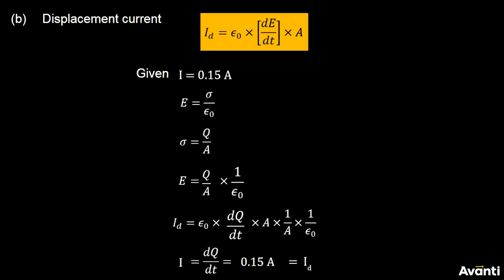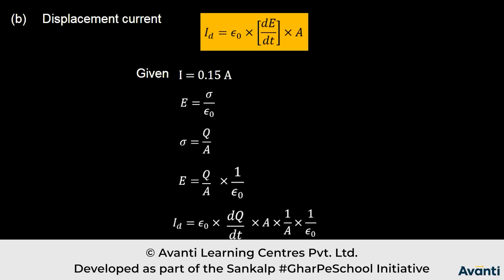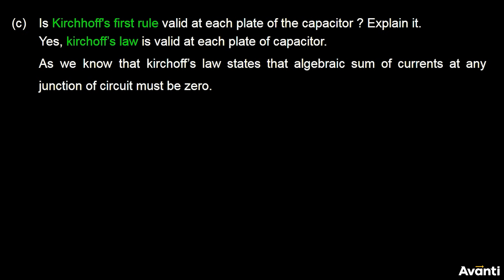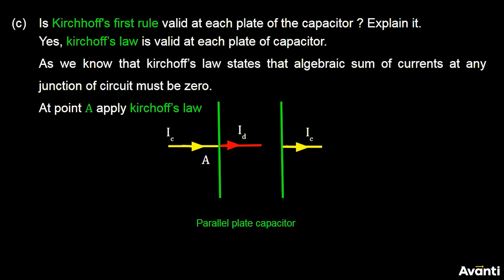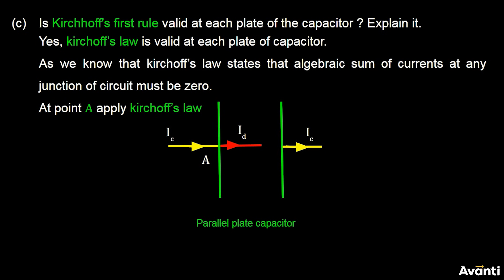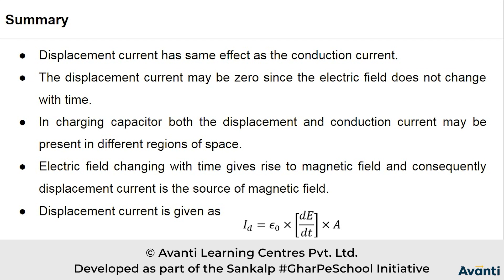So first we have this: Kirchhoff's law is valid because here we have IC equals ID. Let's go to the last part. Kirchhoff's law is valid because at the first plate, IC is current in and ID is current out, so algebraic sum of current is zero. At the second plate, current in is ID and current out is IC, and the two magnitudes are the same. In our question, the magnitude is 0.15 ampere. So yes, Kirchhoff's law is valid here.